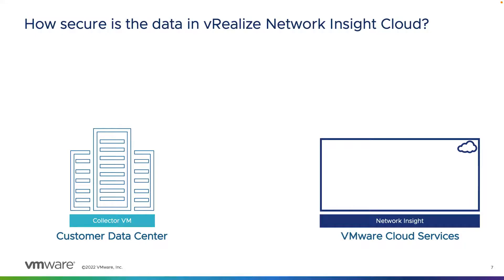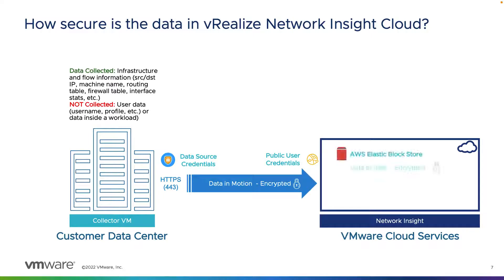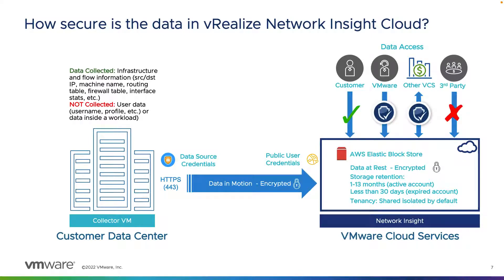So let's talk about how secure the data is within vRealize Network Insight Cloud — this also pertains to vRealize Network Insight Universal in a SaaS deployment. The collector virtual machine, running within your data center or multiple data centers, collects things like IPs, machine names, routing tables, firewall tables, and interface stats — depending on the data sources added within the product. What we do not collect on the collector is user data — we are not pulling usernames, profiles, or specific data within a workload.